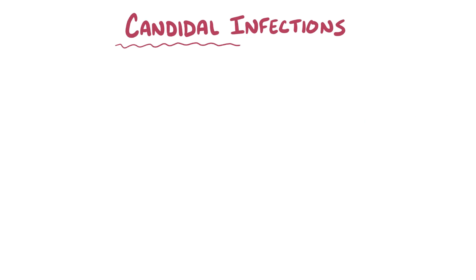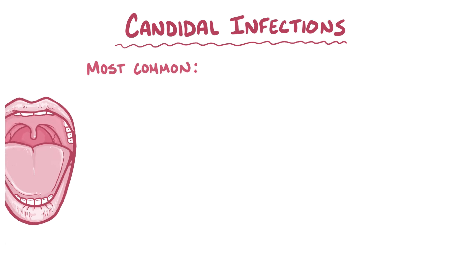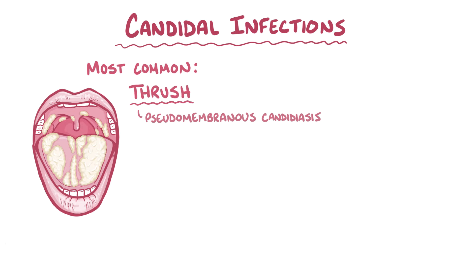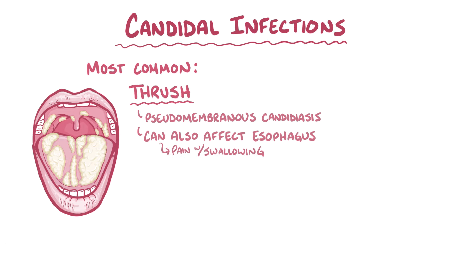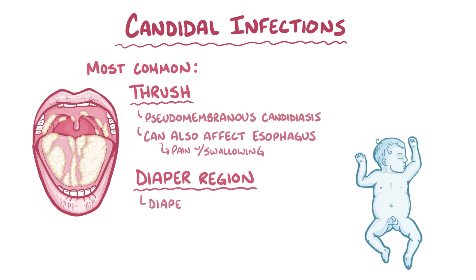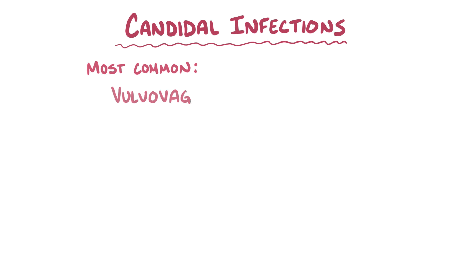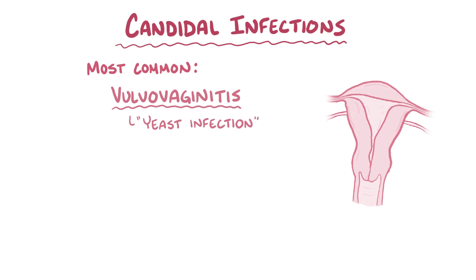Candida infections can affect various parts of the body. The most common location is in the mouth, where it causes thrush, which is usually a pseudomembranous candidiasis — so classically it looks like white cottage cheese on the buccal and gingival mucosa. Candida can also affect the esophagus, resulting in an esophagitis that can cause pain with swallowing. Candida can affect the diaper region of babies, causing a diaper rash with redness surrounded by scattered red spots called satellite lesions, because they look like tiny red satellites not contiguous with the rest of the rash. Another common one is vulvovaginitis, commonly called a yeast infection in women, and it can cause vaginal itching and discharge as well as pain while urinating.